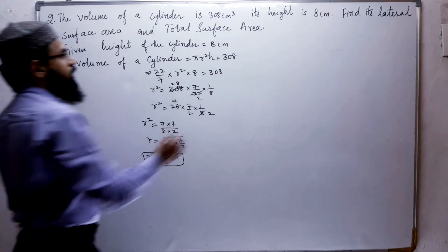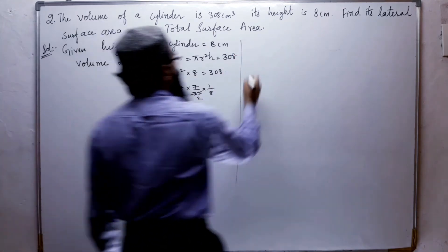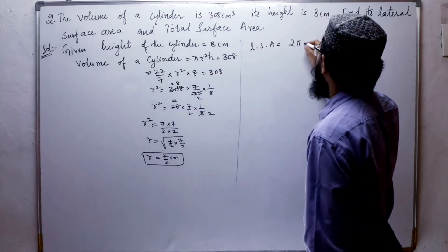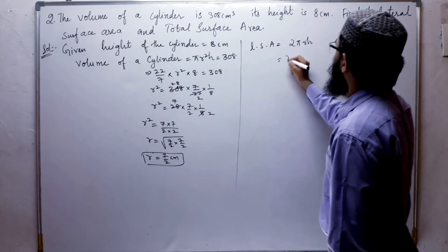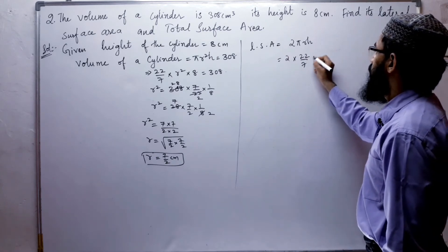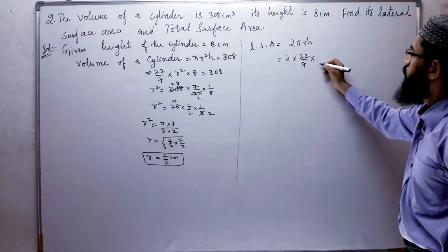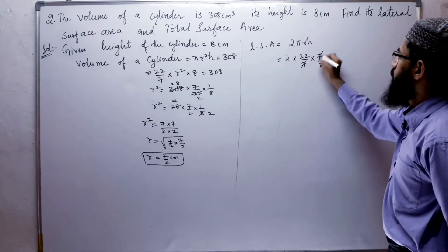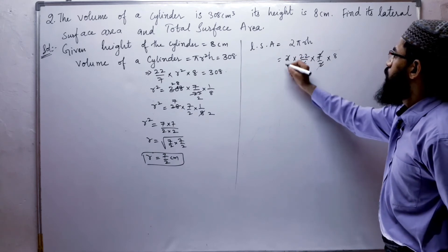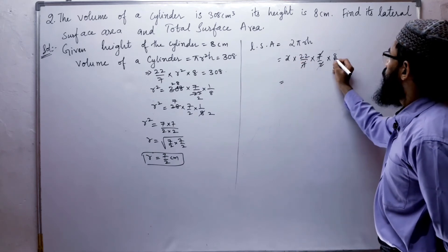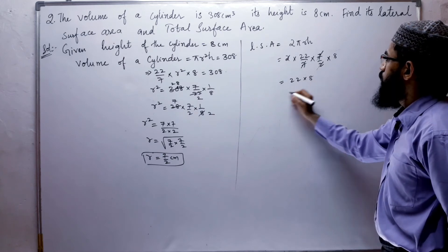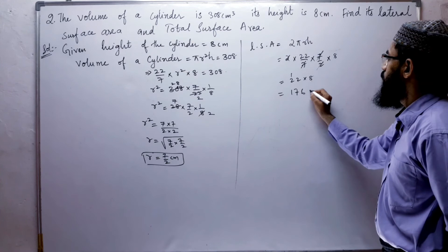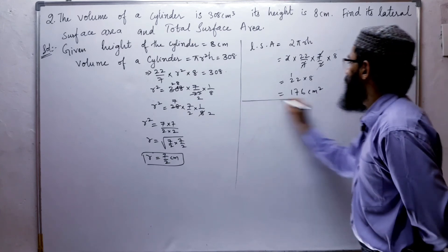We have to find the lateral surface area. The formula is 2πrh. So, 2 × (22/7) × (7/2) × 8. The 7s cancel and the 2s cancel, leaving 22 × 8. 8 × 22 equals 176. So the lateral surface area is 176 square centimeters.